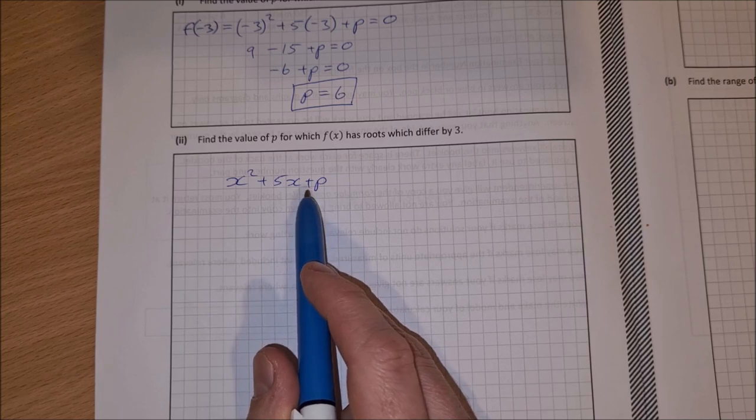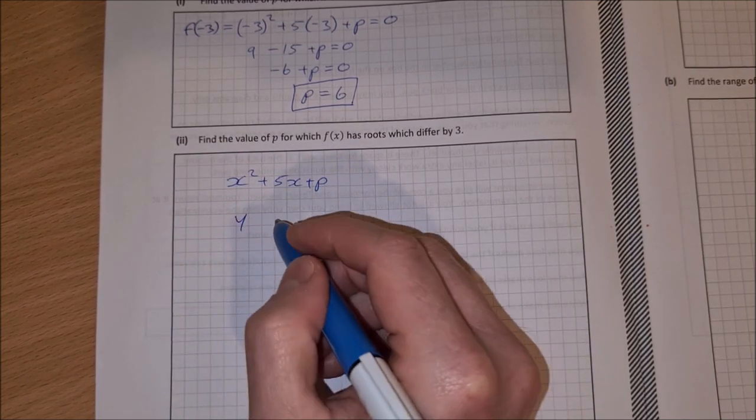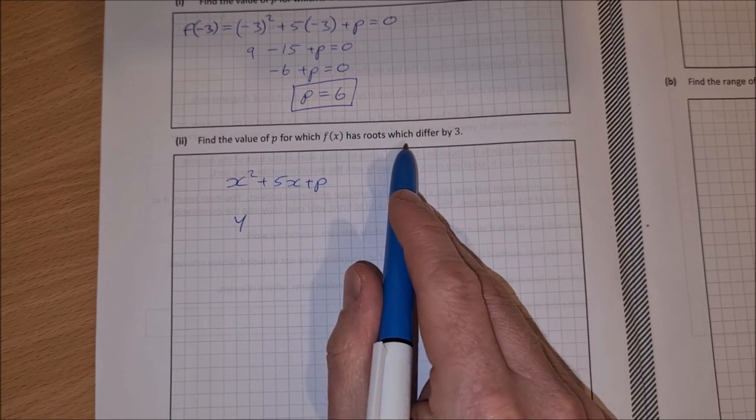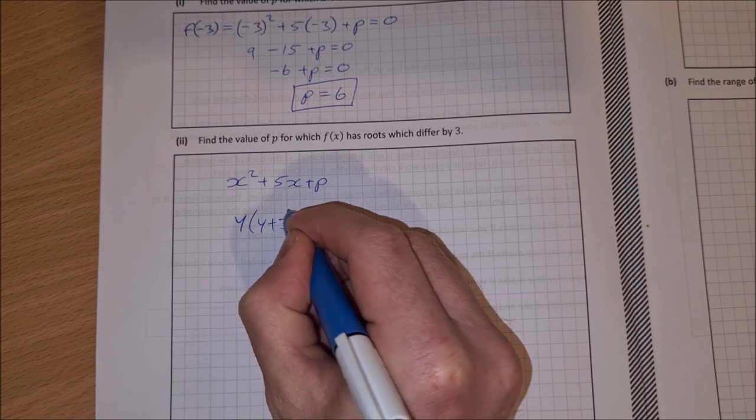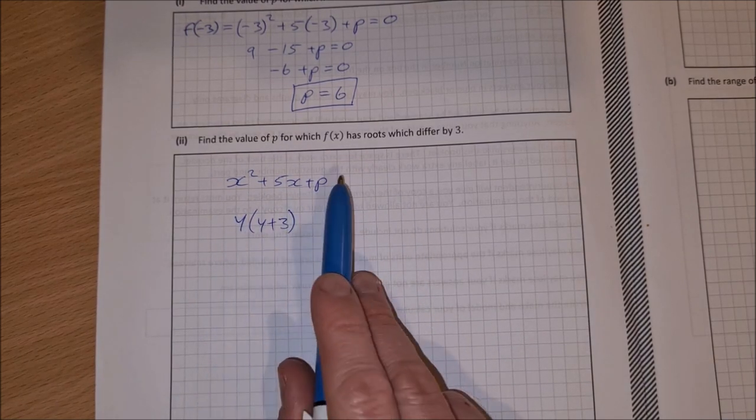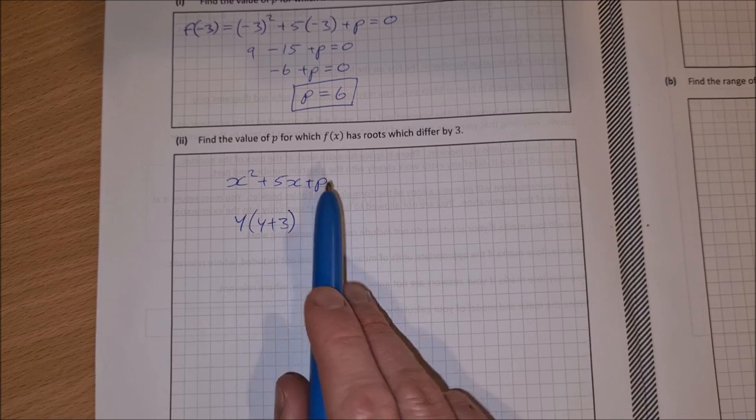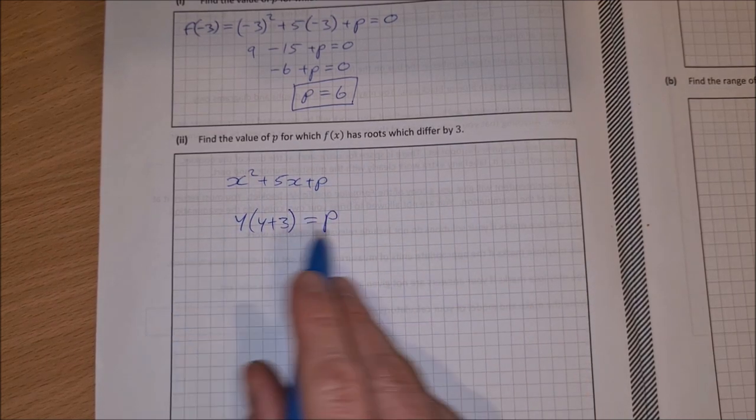If I have a factor, let's call the factor y. My other factor is going to be y plus 3. Now if I multiply my two roots, the answer is the constant p. So y by y plus 3 is equal to p. So that's one part of it.